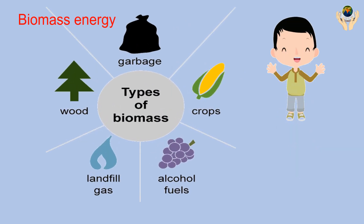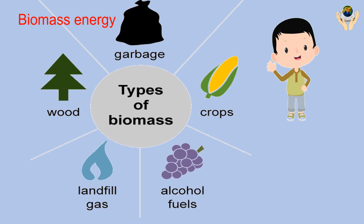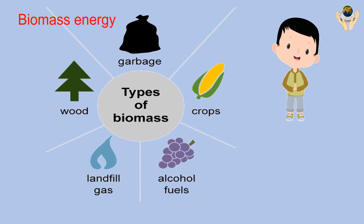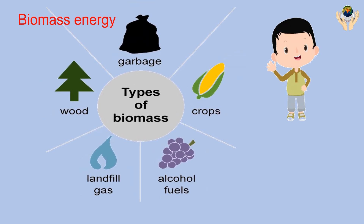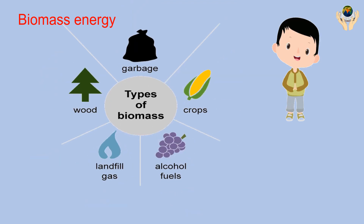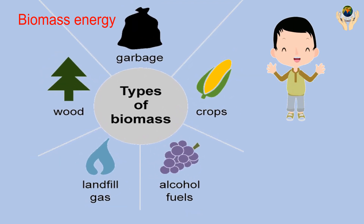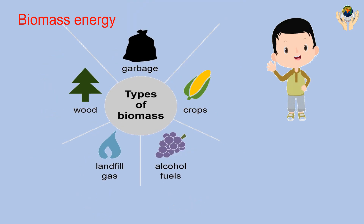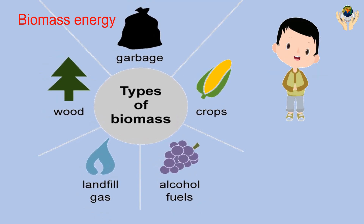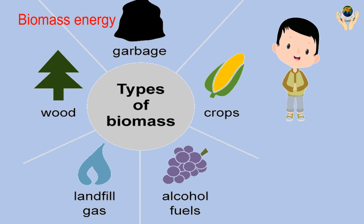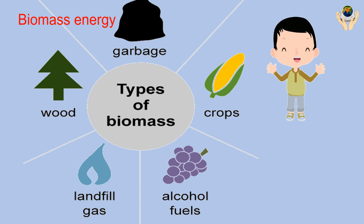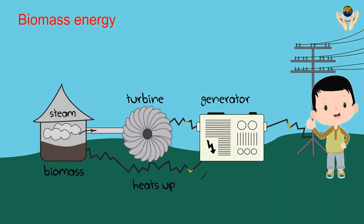Biomass energy is the use of organic materials to generate energy. Biomass is organic matter — things made in nature like wood pellets, grass clippings, and even dung. Crops like sugarcane and corn can also be used to create biofuels, and because plant matter can be regrown, it is a renewable source of energy.